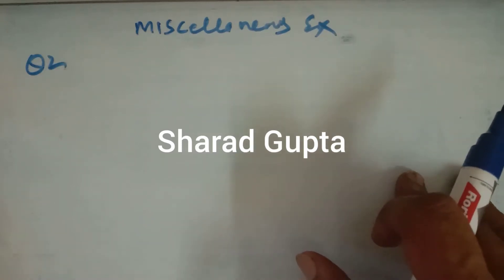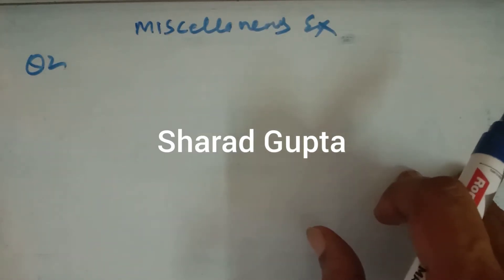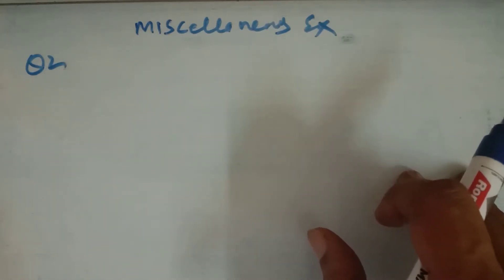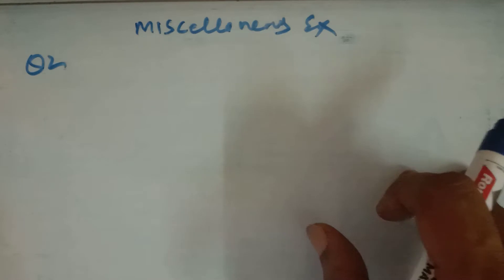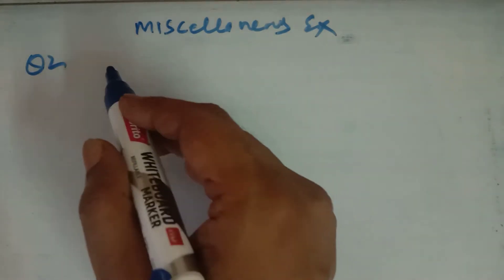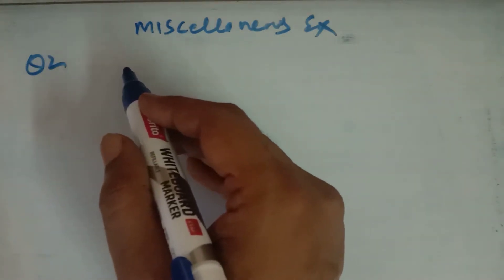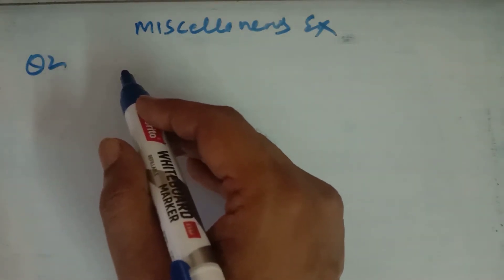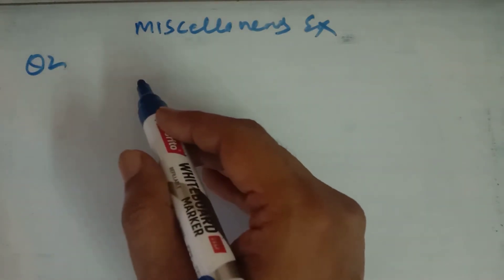This is lecture number 8 for the chapter Conic Section for class 11th. We have done up to question number 1 of the miscellaneous exercise in the last lecture.